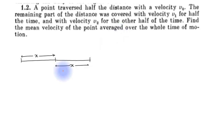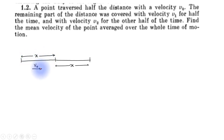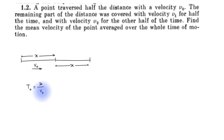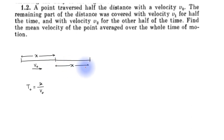In this problem, it is given that the particle travels half the distance x with velocity v0. So the time taken will be t0 equals x divided by v0. Then for the other half, it travels with velocities v1 and v2.